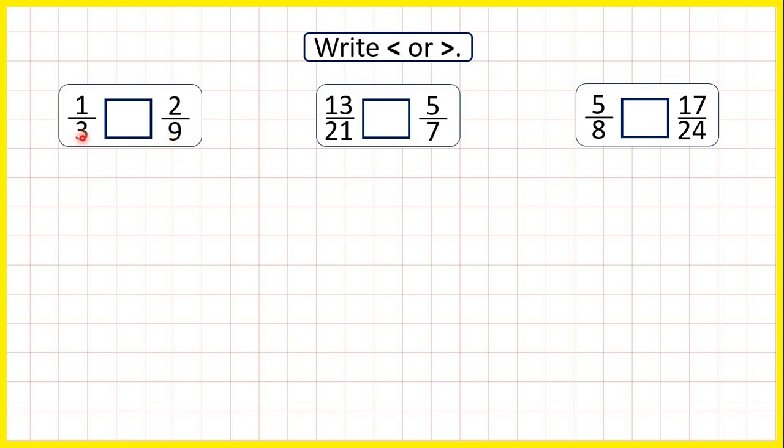Now 9 is in the 3 times table, so we can find an equivalent fraction to 1/3 with a denominator of 9. We can use multiplication to find equivalent fractions, and 3 times 3 is 9. What we do to the denominator, we need to do to the numerator as well. 1 times 3 is 3, so 1/3 is larger than 2/9.